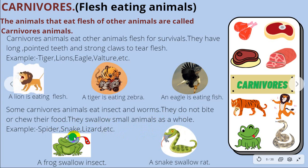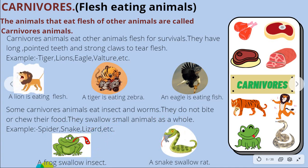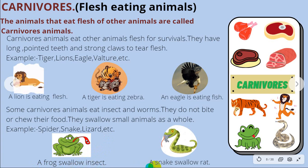Examples of such carnivorous animals are spider, snake, and lizard. A frog swallows insects, and a snake swallows a rat.